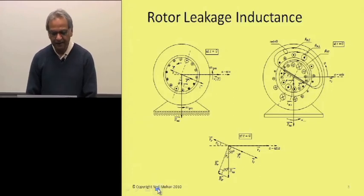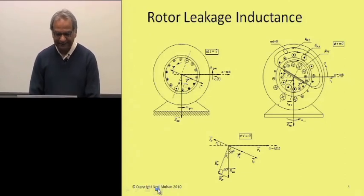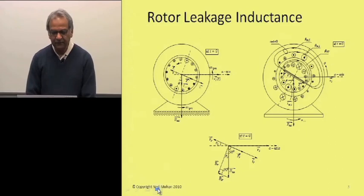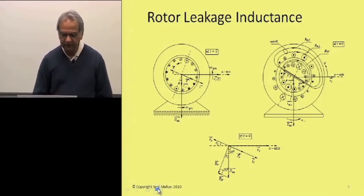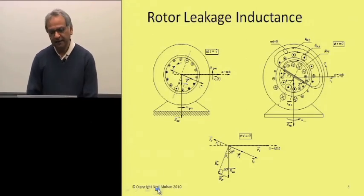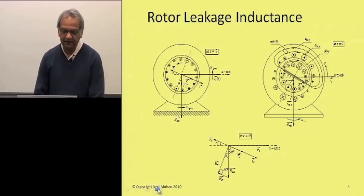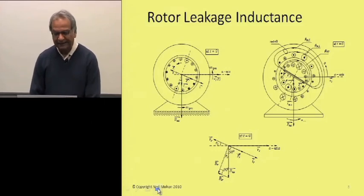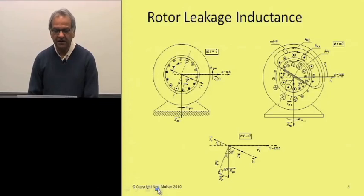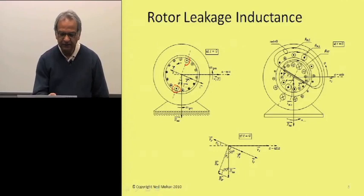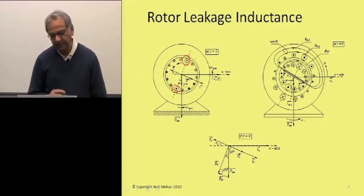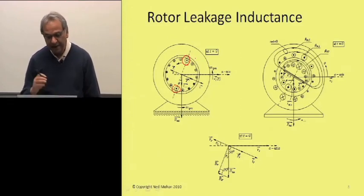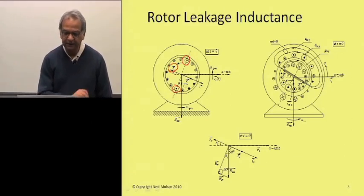Let's take the case where we do have rotor leakage inductances. At this instant of time, the flux density vector B is pointing downwards, as shown. Therefore, the two bars — one on top and one at the bottom — should have the maximum voltages induced. But because of the rotor leakage effect, the currents are lagging, and therefore the currents are maximum in bars which were cut earlier. The bar here and this bar here has the maximum current, and as a consequence, the rotor MMF, which was horizontal in the absence of rotor leakage, is now at the power factor angle theta sub R, as shown.